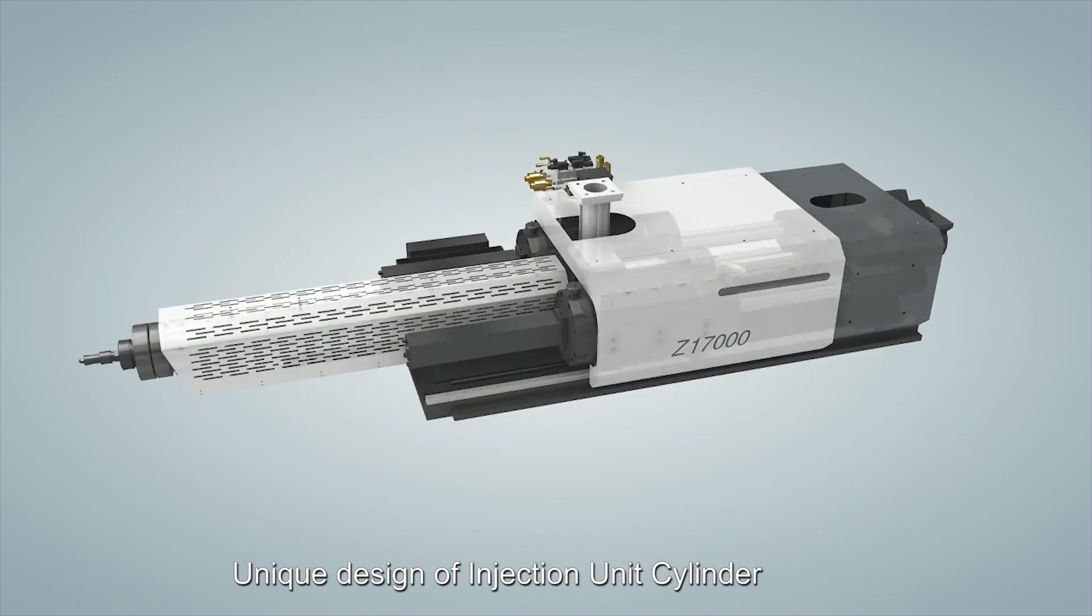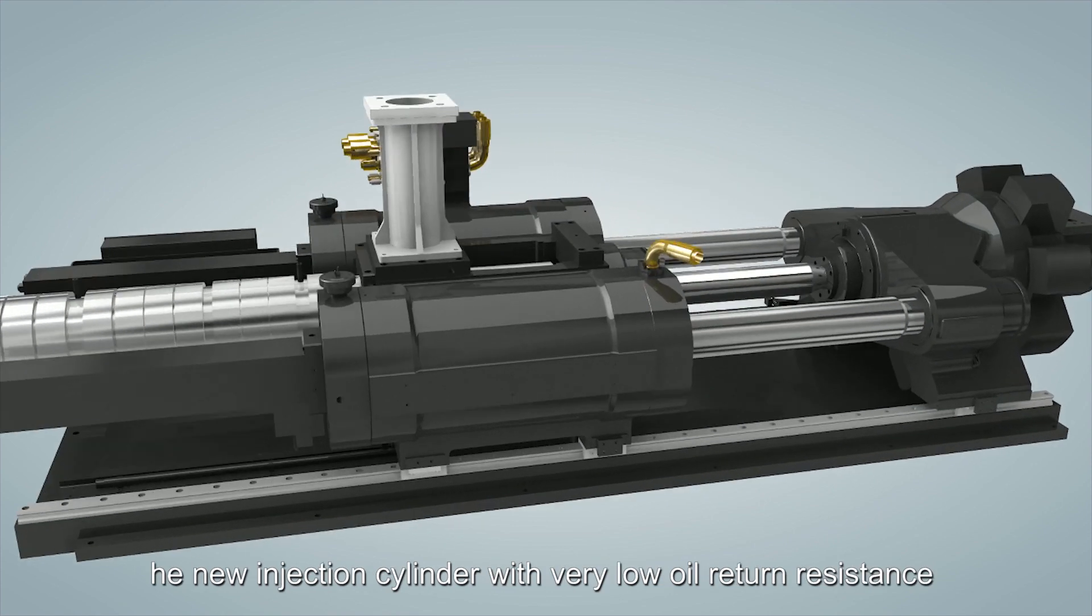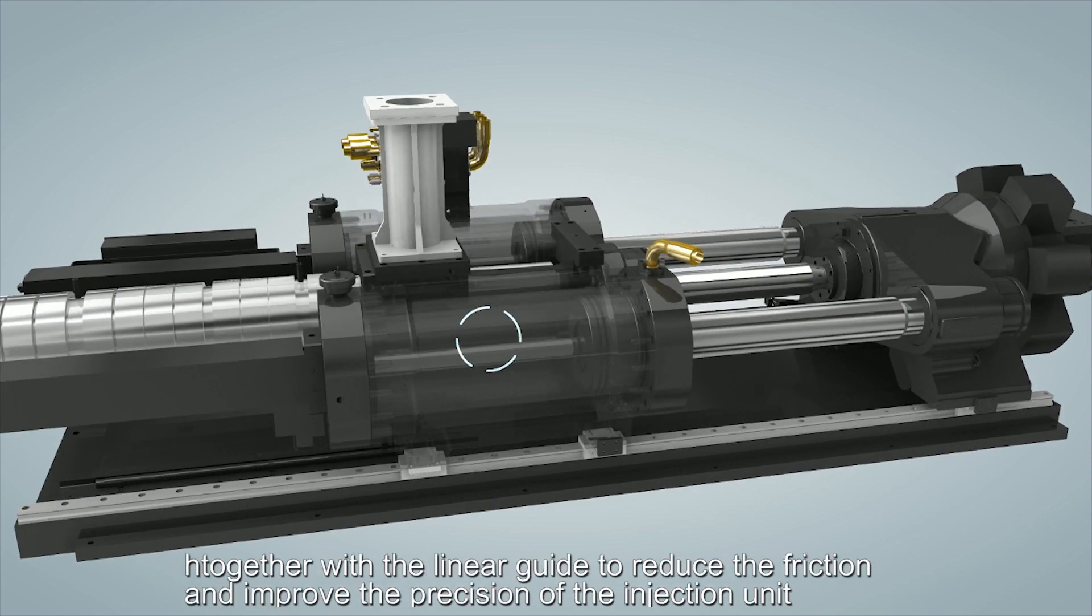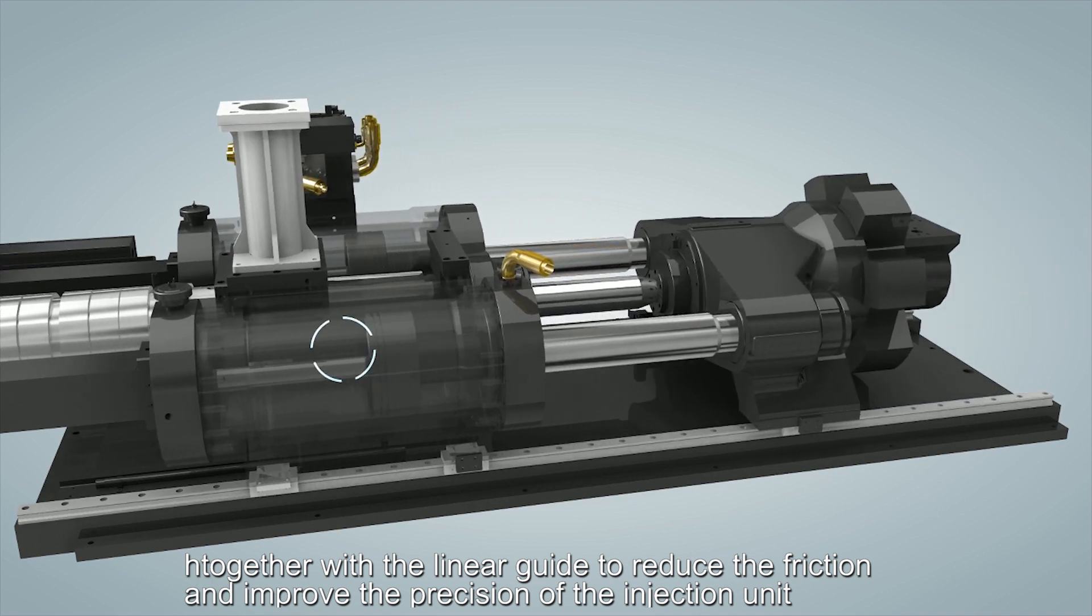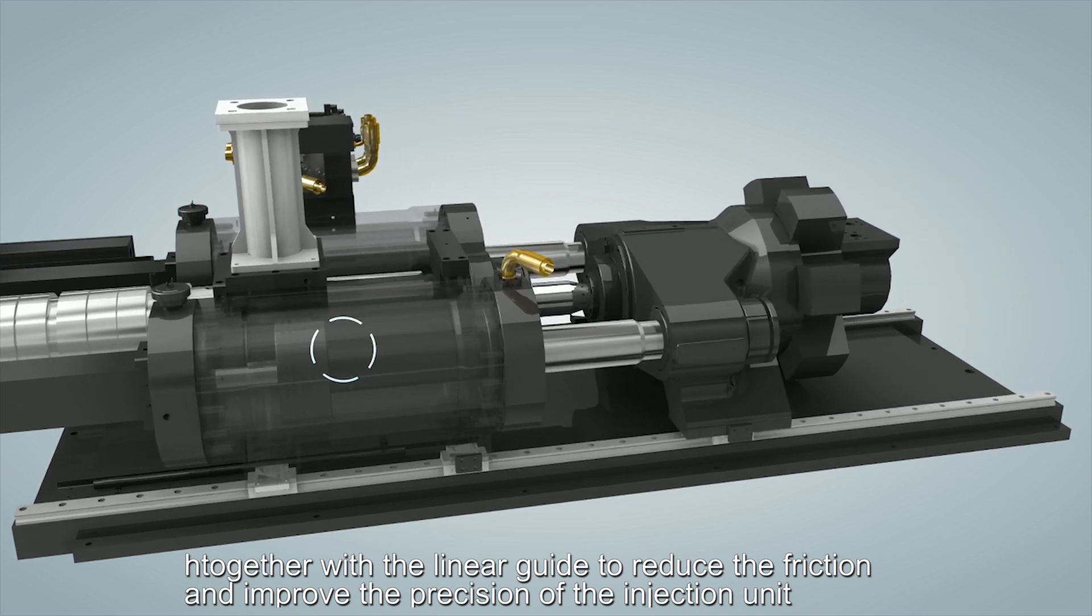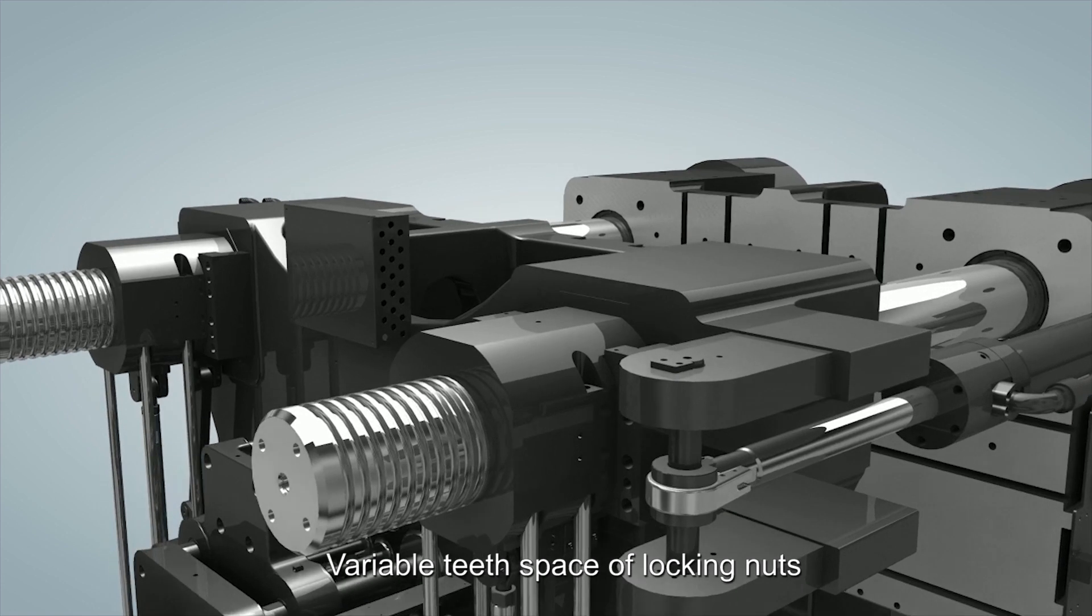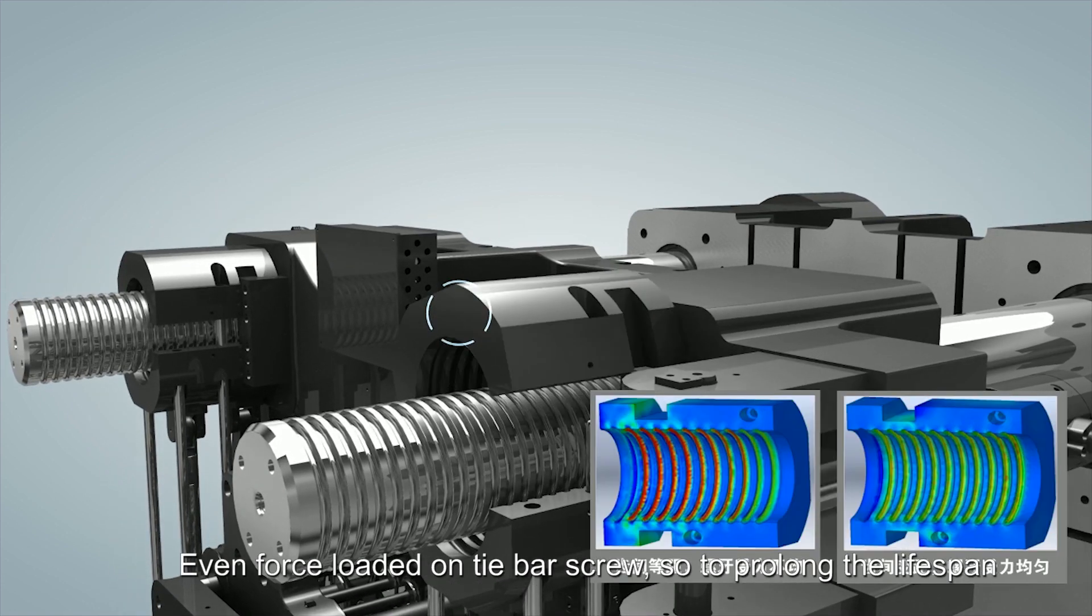The new injection cylinder with very low oil return resistance, together with linear guide, reduces friction and improves precision. Variable T-space of locking nuts ensures even force loaded on tie bar screw to prolong lifespan.